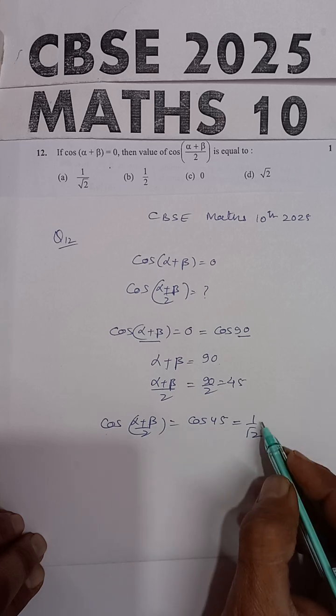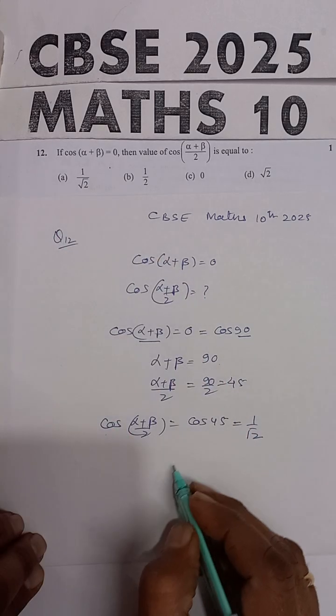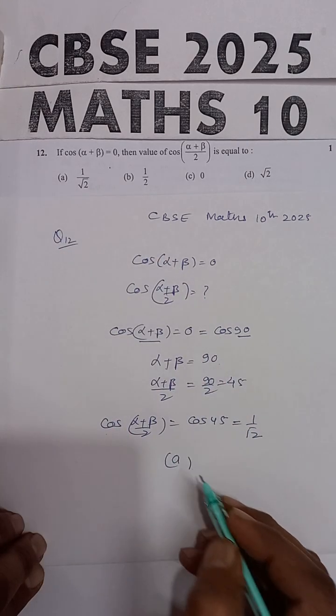So cos alpha plus beta upon 2 ka answer, 1 upon root 2 hai. And this is given in option A. So option A is the correct answer.